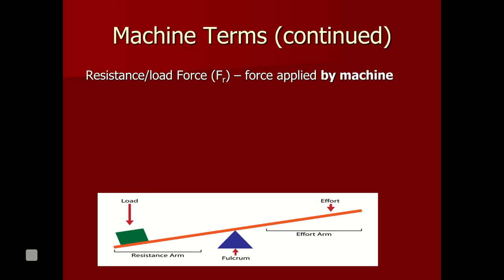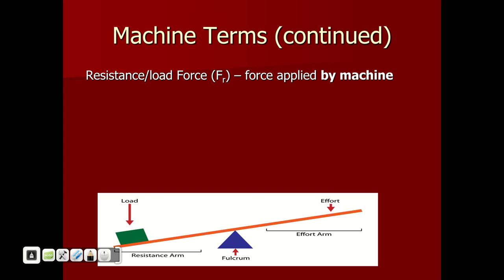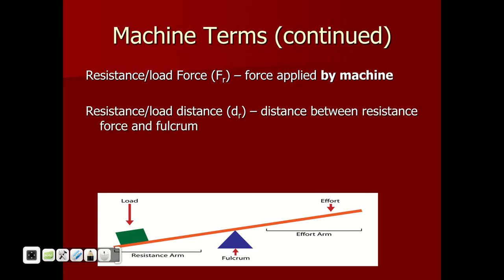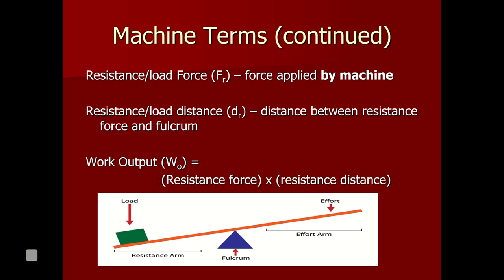On the opposite side, we have the resistance or load force — this is what you are lifting, the weight of what you are lifting. We also have the resistance or load distance, just like the effort distance: it's the distance between the resistance and the fulcrum. So we have two forces and two distances. If I multiply the load force by the load distance, that equals the work output — how much work you're getting out of the machine.